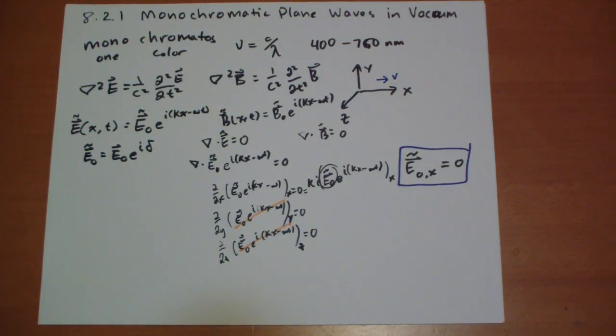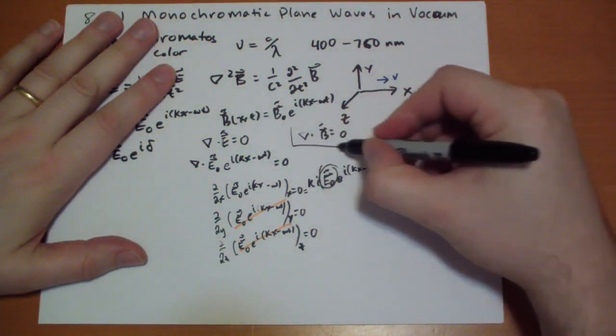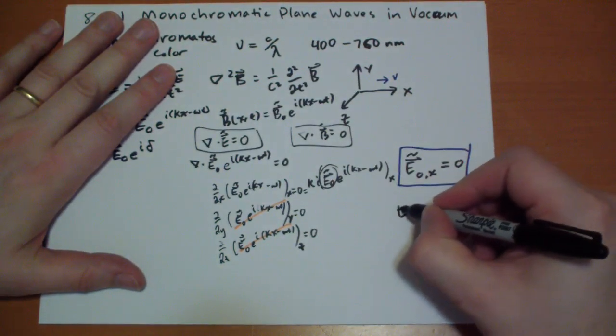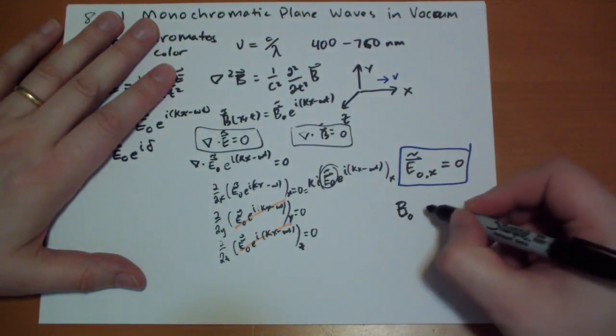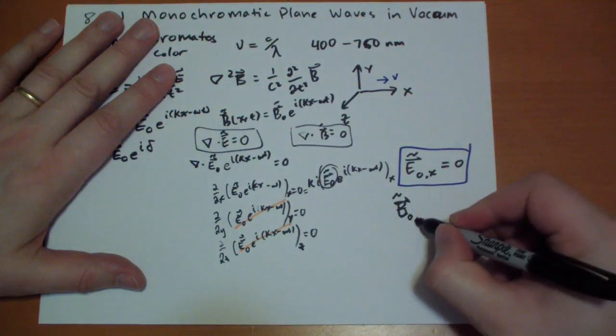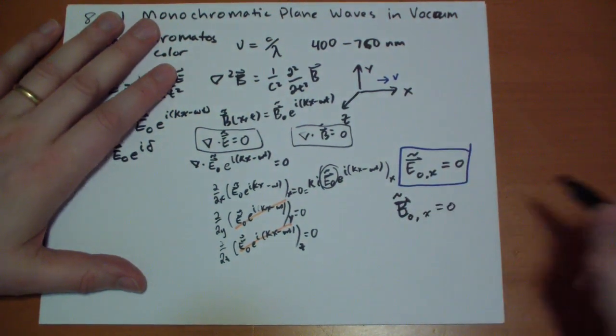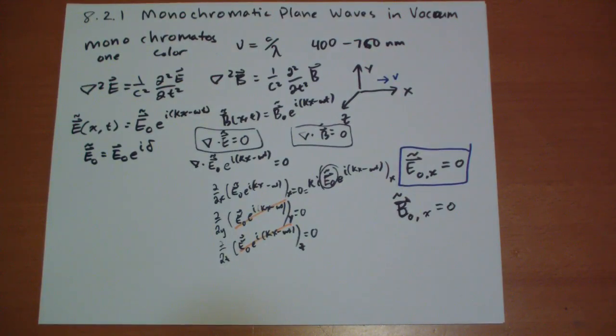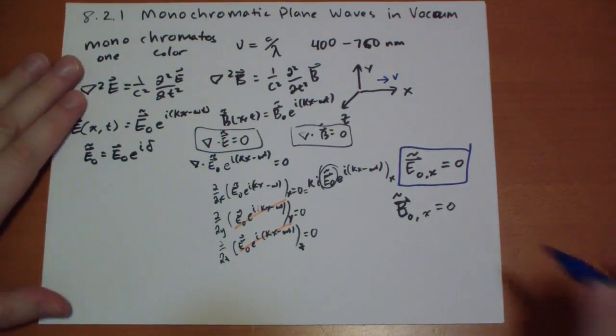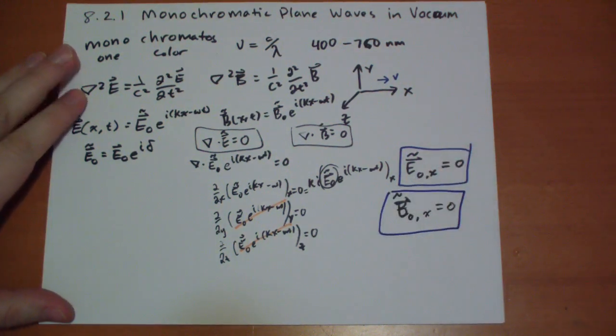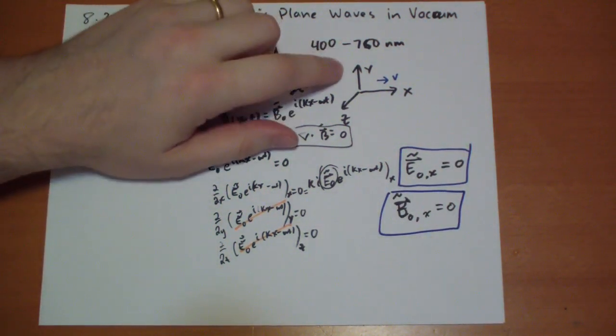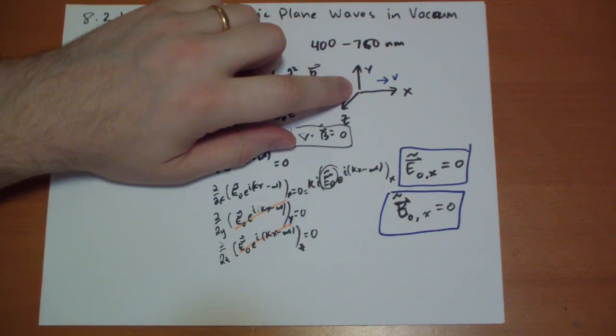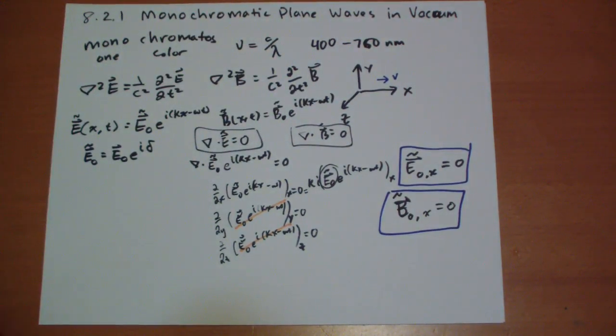We're continuing the discussion of the nature of EM plane waves in a vacuum. We've already discovered these two rules from the first two rules of Maxwell's laws. This is the B vector, and my handwriting is just terrible, I apologize for that. Namely, that the E field and the B field cannot have any X dependency. So it can't point in the X direction, it has to be constrained to the YZ plane. So that's the first thing we discovered.